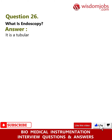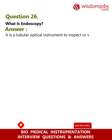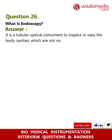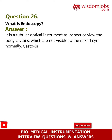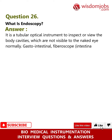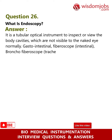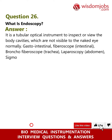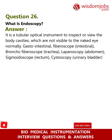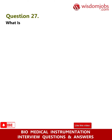Question 26: What is endoscopy? Answer: It is a tubular optical instrument used to inspect or view body cavities which are not visible to the naked eye. Applications include intestinal fibroscope, broncho fibroscope, laparoscopy for the abdomen, sigmoidoscope for the rectum, and cystoscopy for the urinary bladder.